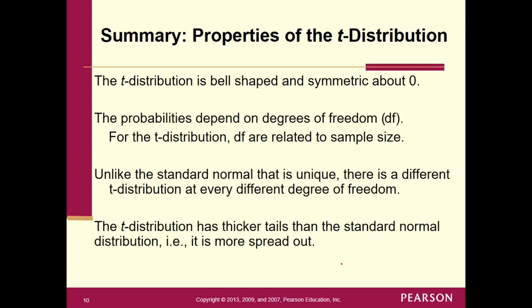The t-distribution is bell-shaped and symmetric about zero — it already sounds like the standard normal distribution. But it does differ: the probabilities depend on what we call degrees of freedom, designated as df. For the t-distribution, degrees of freedom are related directly to the sample size. In section 8.3, degrees of freedom is simply equal to n minus 1. That doesn't apply in every situation, but that's how it applies here in 8.3.